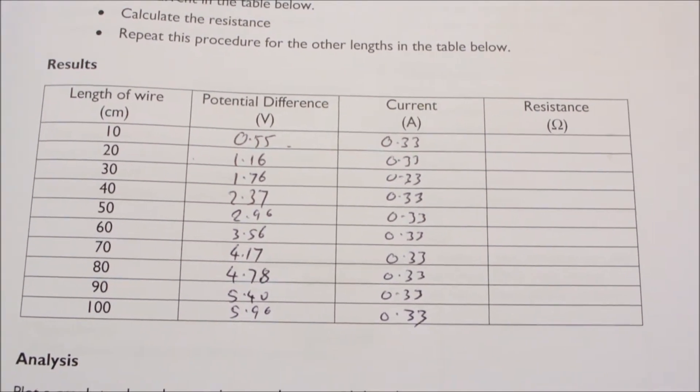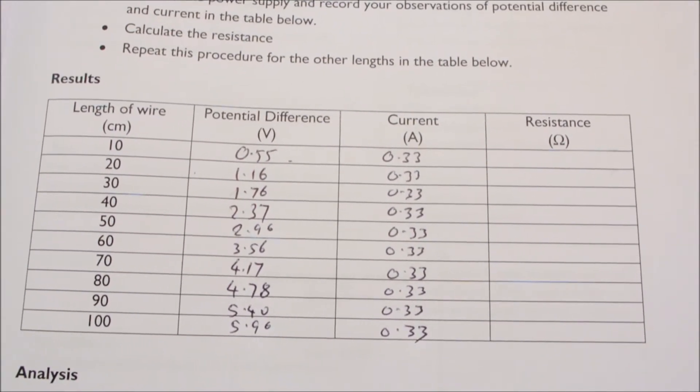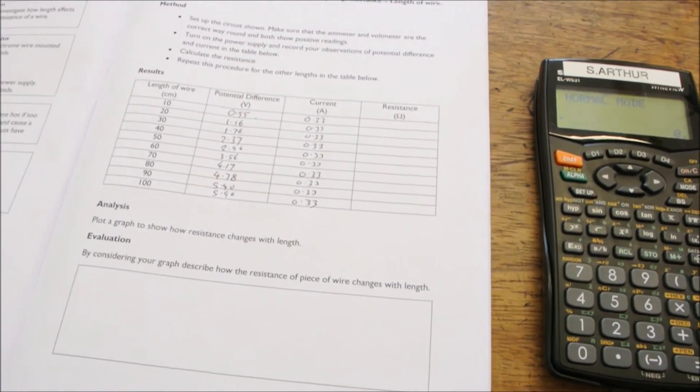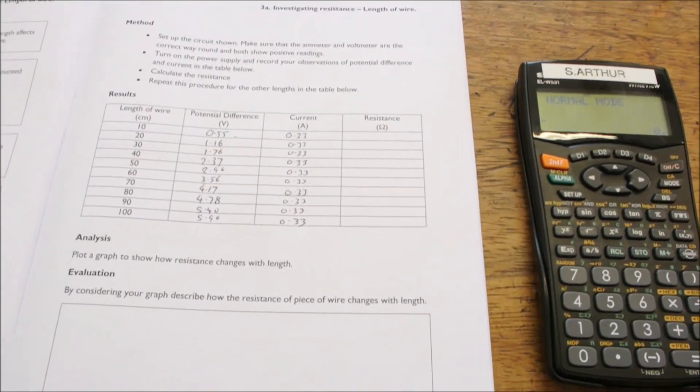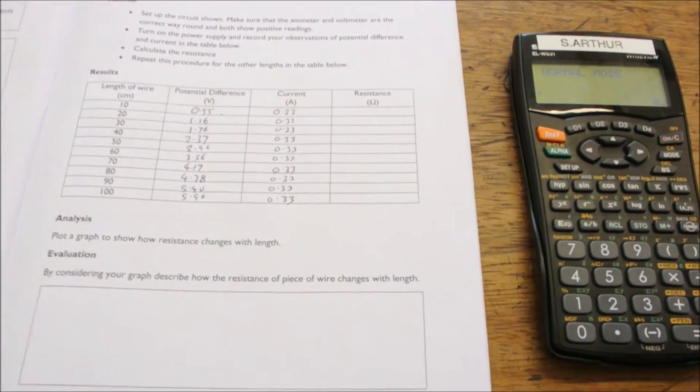The next task is to calculate the resistance because that is what we'll be plotting against the length of wire. Now we're going to calculate a couple of resistances just to show you how it's done. The resistance is calculated by taking the potential difference and dividing by the current.